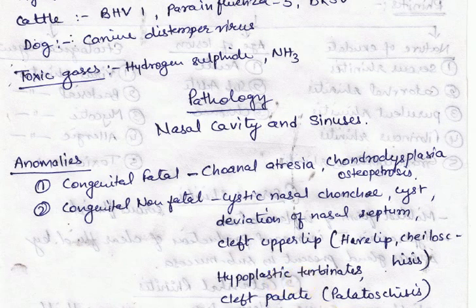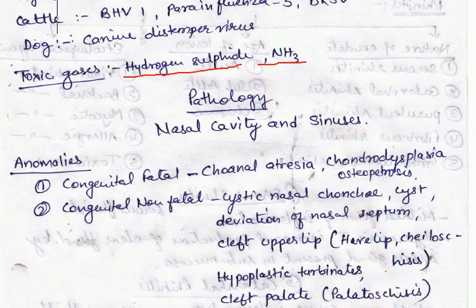Toxic gases. Certain gases also damage the respiratory defense mechanism and make animals more susceptible to secondary bacterial infection. For example, hydrogen sulfide and ammonia can damage the pulmonary defense mechanism and increase susceptibility to bacterial pneumonia.